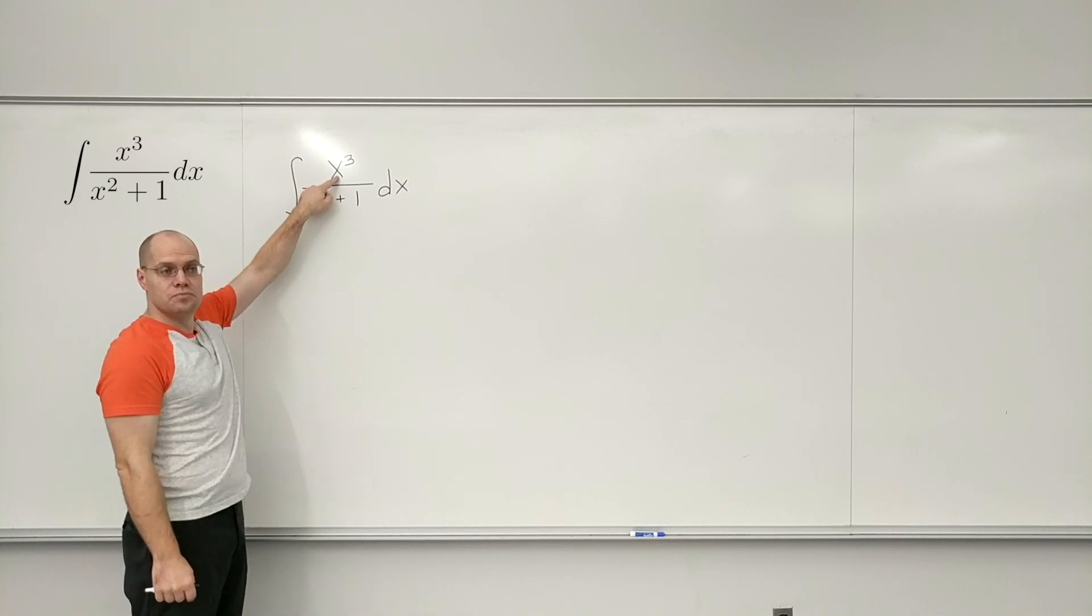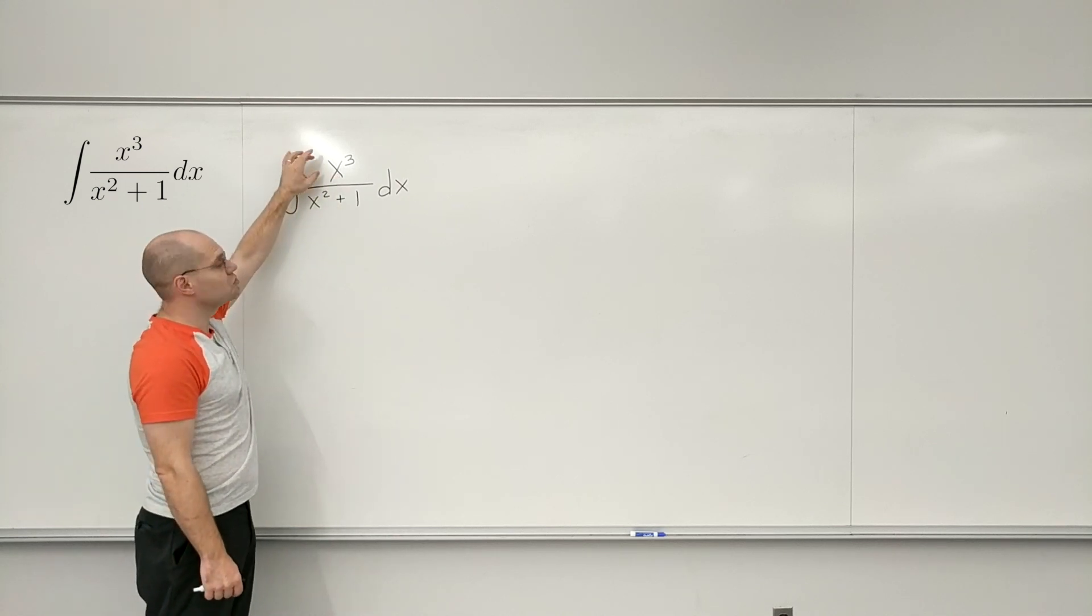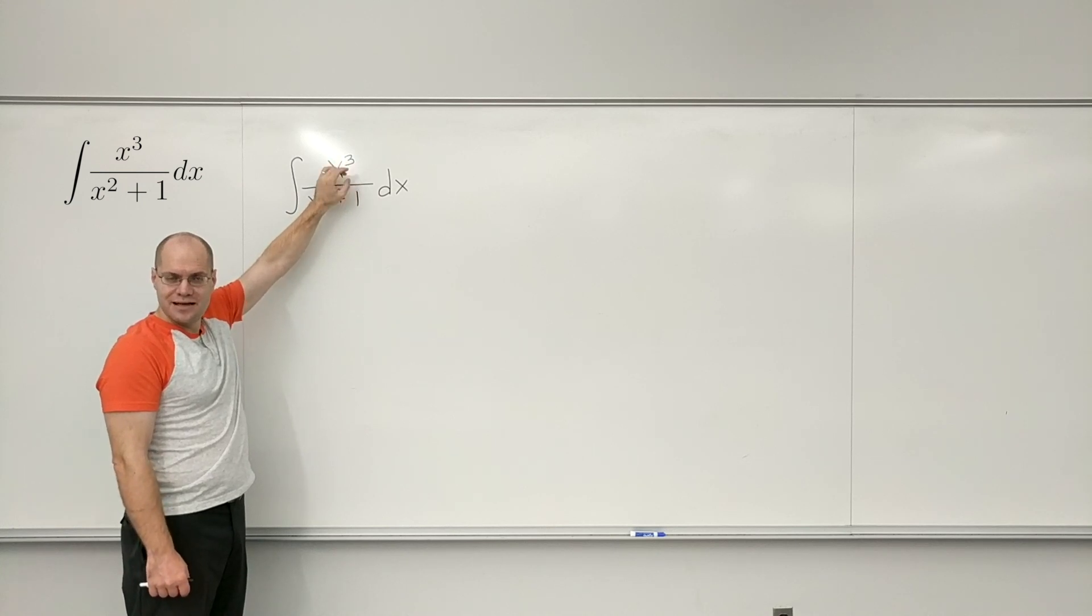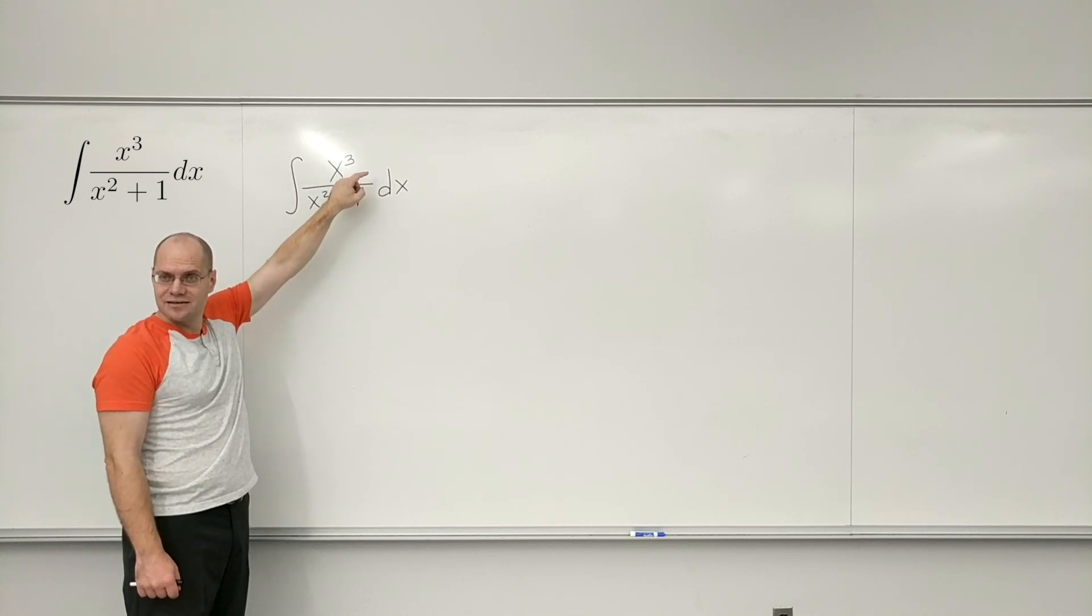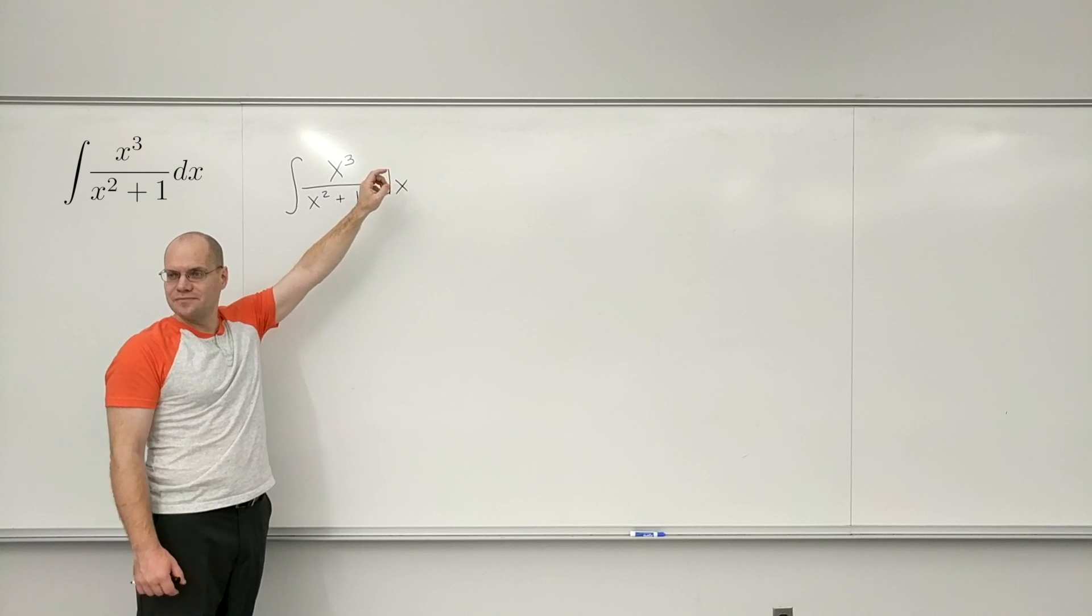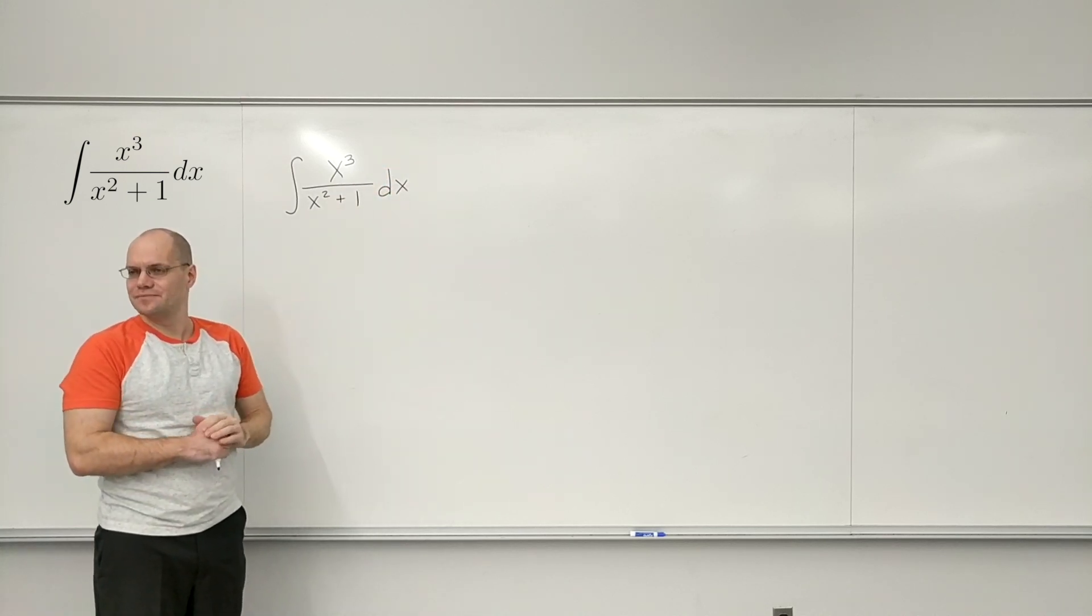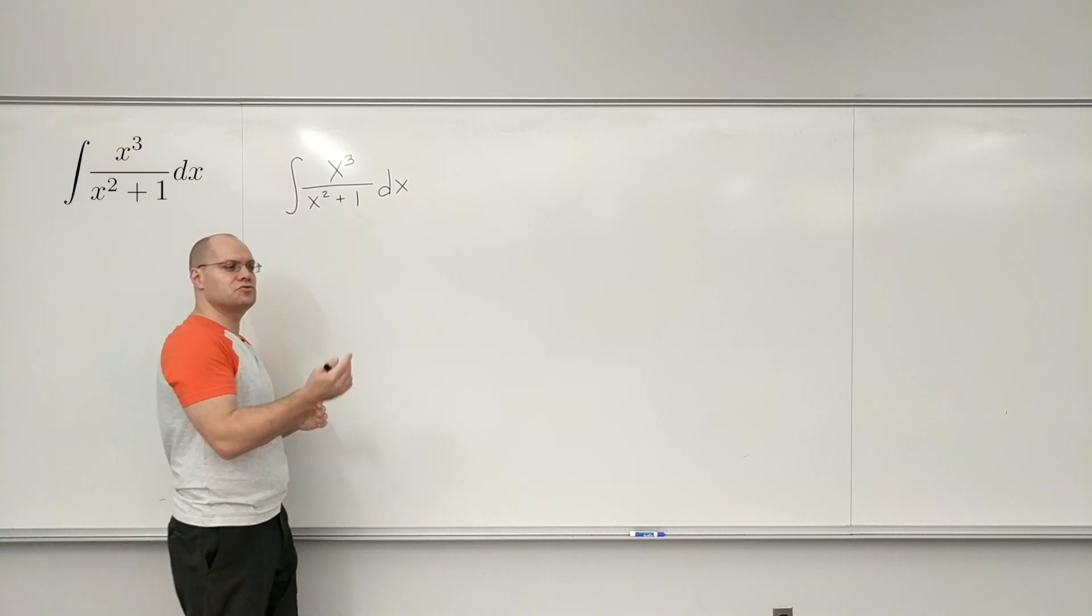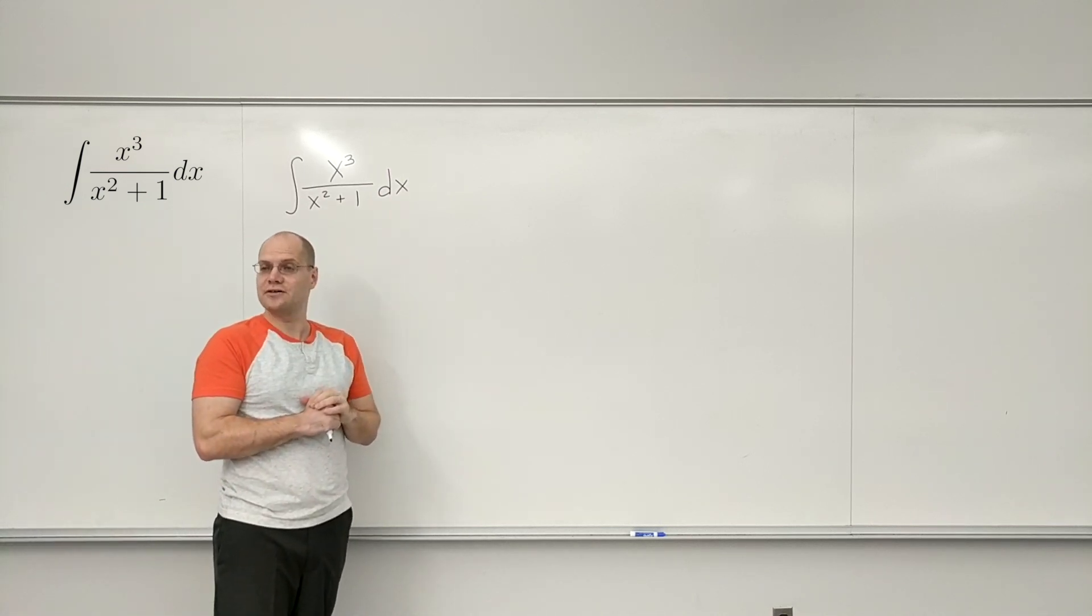We split x cubed into x squared and x. Do you remember that? And then x dx was dx squared. So everything became a function of x squared and this was reduced to a simpler integral that we knew how to do.